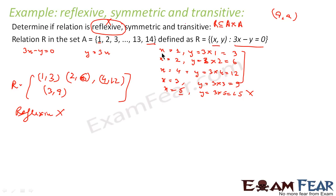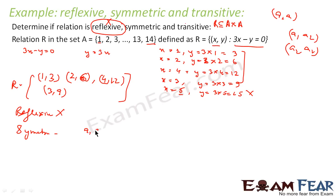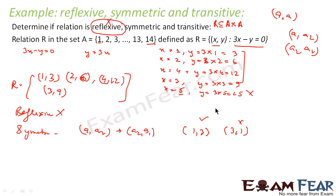For symmetric, if (a1, a2) is there, then (a2, a1) has to also be there. So if you see, (1,3) is there but (3,1) is not there. So it is not symmetric.